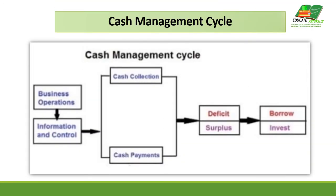The cash management cycle has been shown here. In this diagram, you can clearly trace out that when there is a business operation, that is followed by information, then it may result in a cash collection or cash payment. When there is cash collection or cash payment, two things may arise: deficit and surplus. When there is a deficit, you need to borrow, and when there is a surplus, you need to invest that cash.